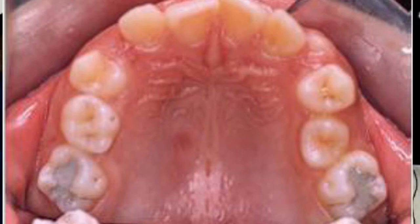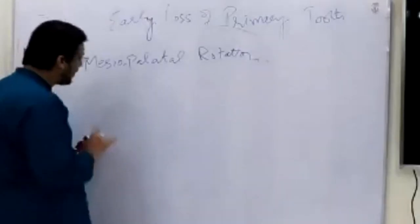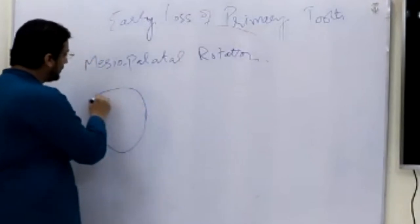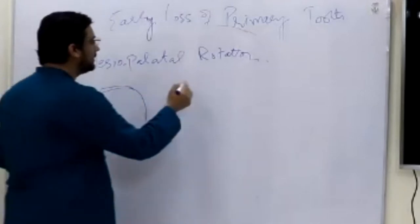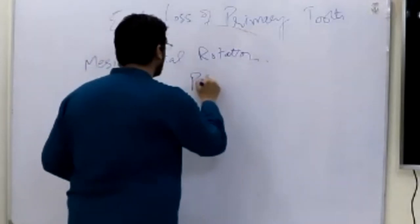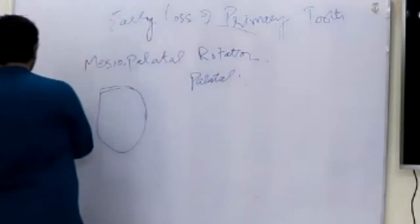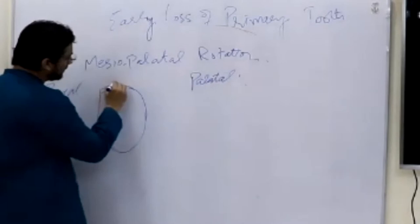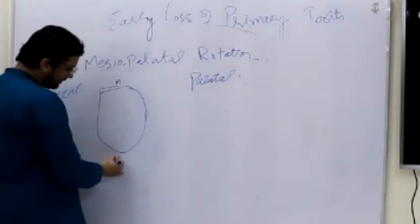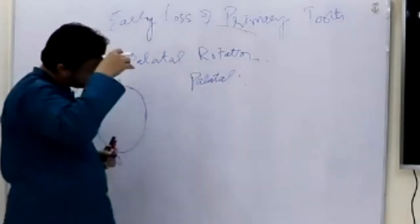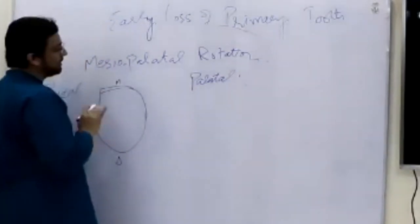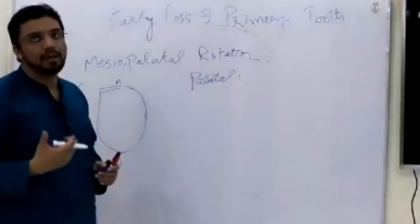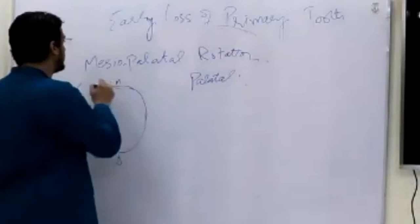We have different types of rotation, and for descriptive purposes, if this is the first femoral molar — this is the palatal side, this is the buccal side, this is mesial, and this is distal. We have different terminologies to describe how a tooth has been rotated.